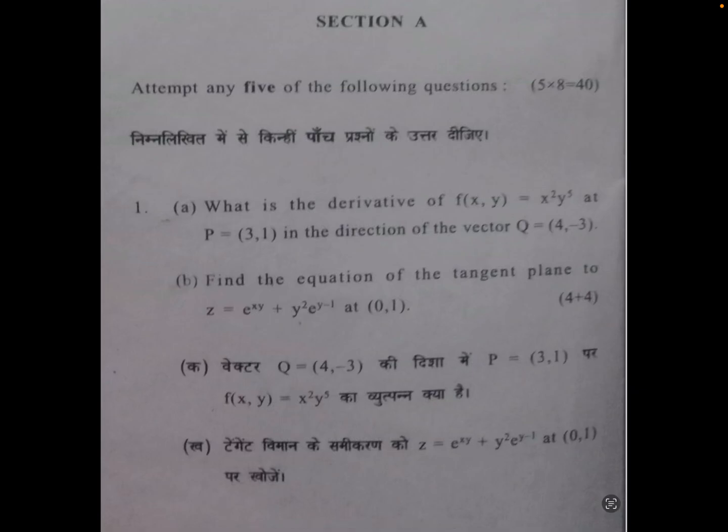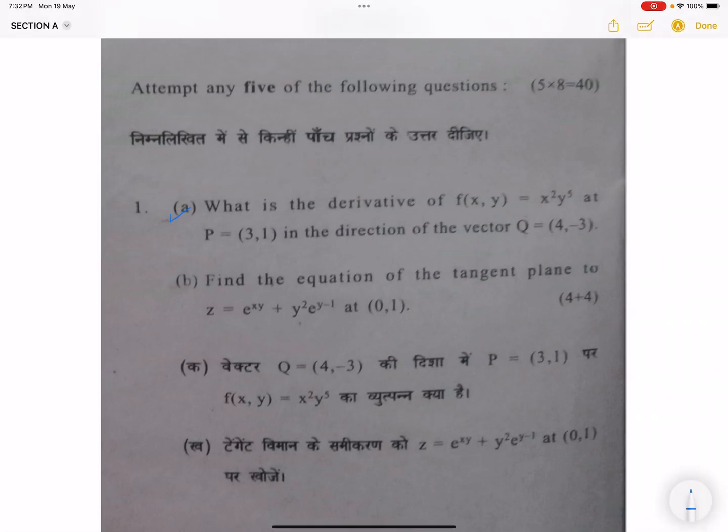Hello everyone, so in this video we will do part b. We have already done part a in the previous video. In this video we will find the equation of the tangent plane to z equals e to the power xy plus y square e to the power y minus 1 at point (0,1).